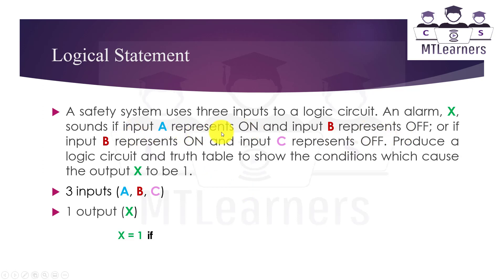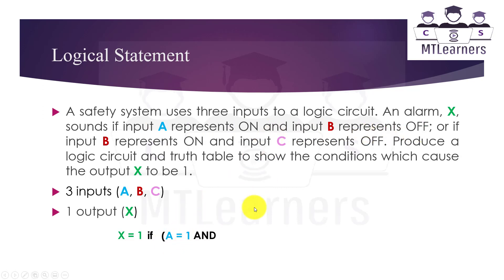The first statement is: A represents on, which means A equals to 1, AND input B represents off, which means the inverse of B — that is B equals to 0.